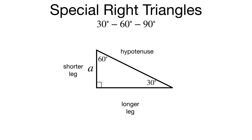If we say our shorter leg is A units long, the longer leg will be A times the square root of 3 units long, and the hypotenuse will be 2A units long.